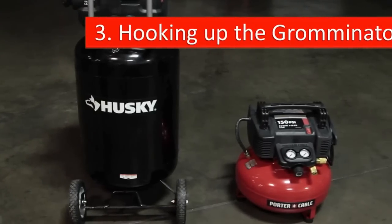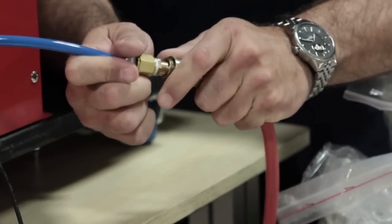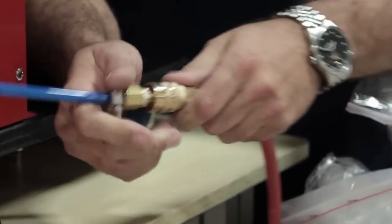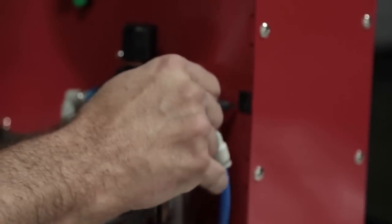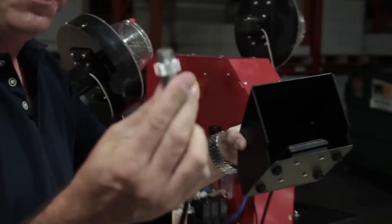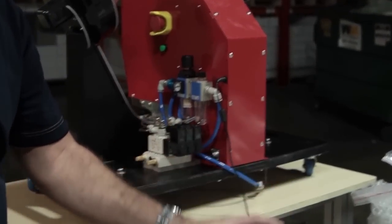Step 3. Hooking up the grominator. Run an air line to the back side of the grominator and plug it in. Plug the power supply into the wall and then plug the DC connector into the side of the grominator. Plug the foot pedal into the side of the grominator.